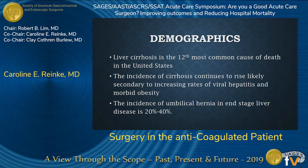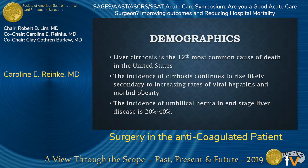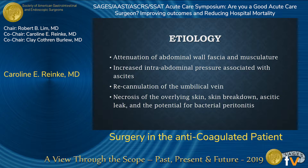Liver cirrhosis is the 12th most common cause of death in the United States, and cirrhosis is rising, likely due to increasing rates of viral hepatitis and morbid obesity. Both of those things are contributing to the incidence of umbilical hernias in the cirrhotic patient. Overall, the incidence is around 20 percent; in cirrhotic patients with significant ascites, that increases up to about 40 percent. This is due to attenuation of the abdominal wall fascia and musculature due to poor nutrition.